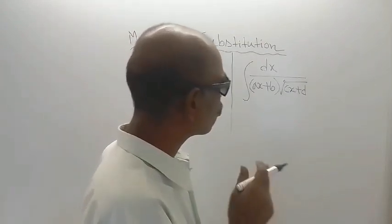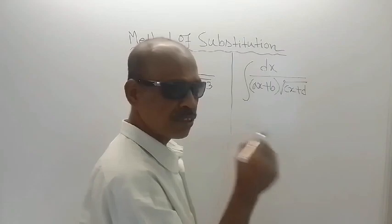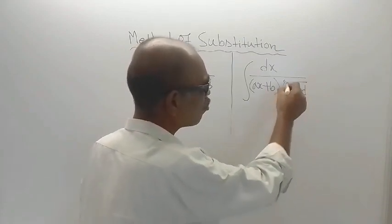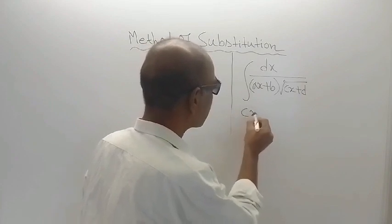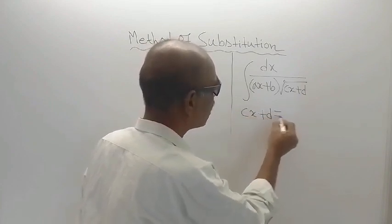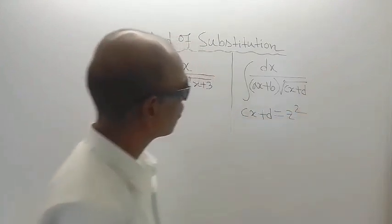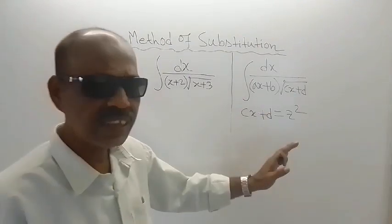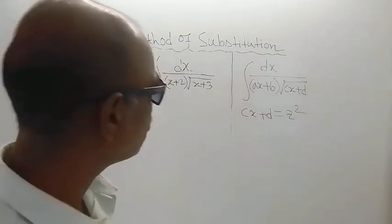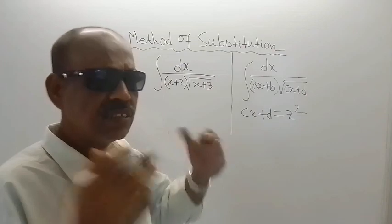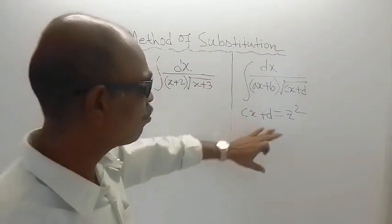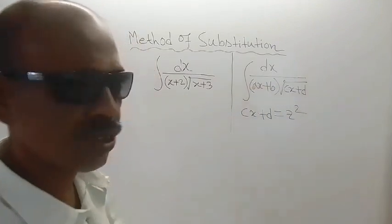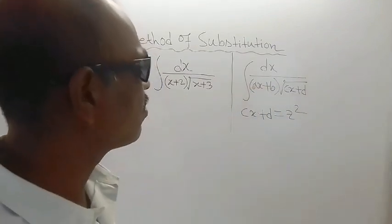So if this be the form of the given integral, in that case what you need to do is that your substitution should be this under root quantity which is equal to cx plus d. That should be taken is equal to z square. If you make such substitution, then the integration will be easy to solve.